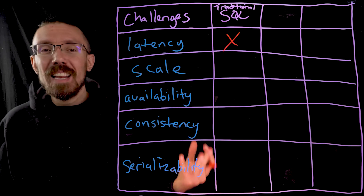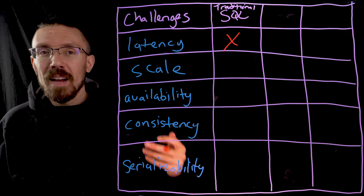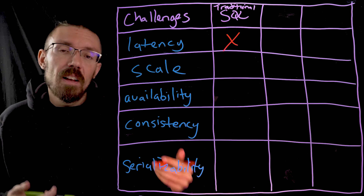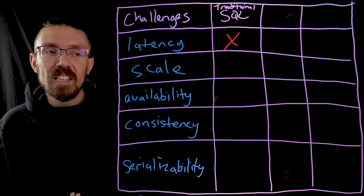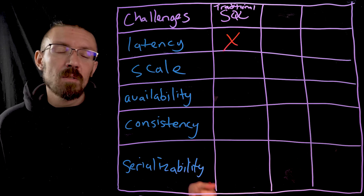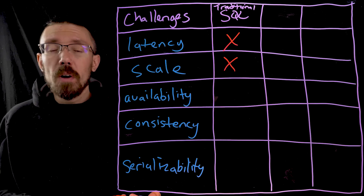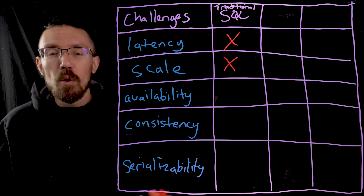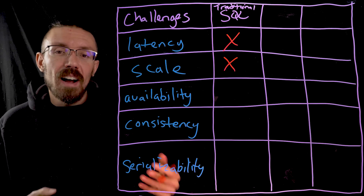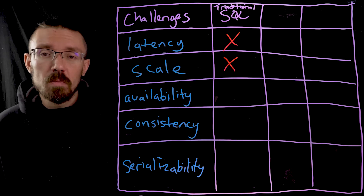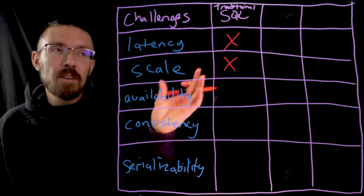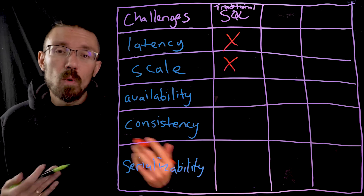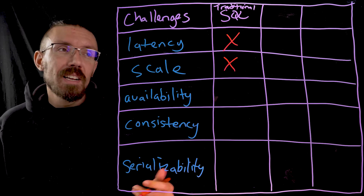For scale, we have the same problem. Most of these databases were originally designed around a single instance — a literal physical server sitting in your office. They just were not built to scale. You can try to add sharding and things like that manually, but it's very intensive in terms of engineering and operations. For availability, we run into the same issue. These databases were not designed to function in the kind of cloud, multi-region, distributed world we're now living in. You can try to create high availability through manual sharding and setting up nodes in different locations, but again it's a bunch of manual work.